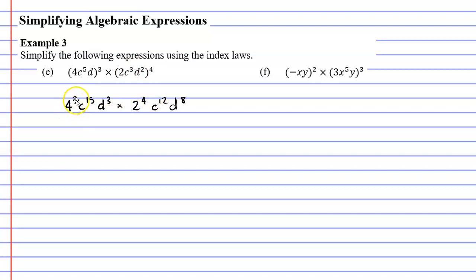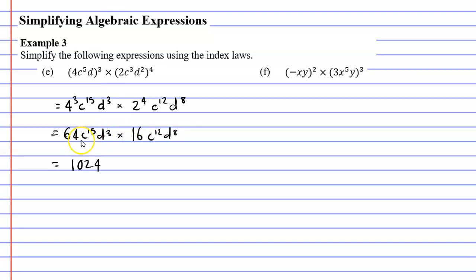To simplify further, 4 to the power of 3 is 64, and 2 to the power of 4 is 16. I can multiply these numbers: 64 times 16 is 1024. When we multiply terms with the same base, we add the powers. Our C's have the same base, so 15 plus 12 is 27, giving C to the power of 27. And D to the power of 11 because 3 plus 8 is 11.